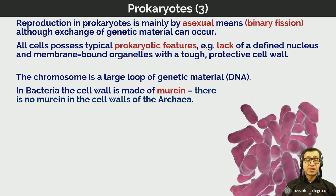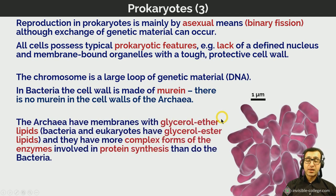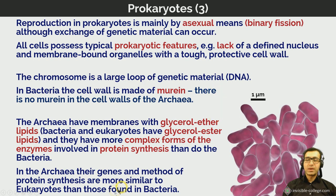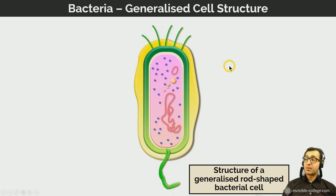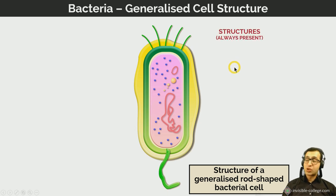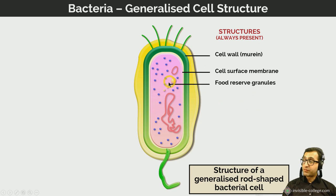Looking at a diagram of a typical or generalized bacterium: not all bacteria have all features, but some are always present. Structures always present include a cell wall made of the glycoprotein murein, a cell surface or plasma membrane, food reserve granules, and a circular loop of DNA making up the bacterial chromosome. Bacteria also have smaller ribosomes — measured in Svedberg units, about 70S in prokaryotes versus 80S in eukaryotes.